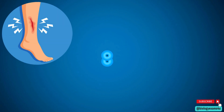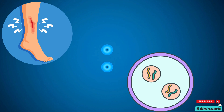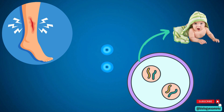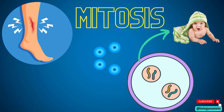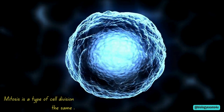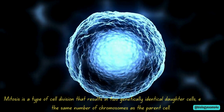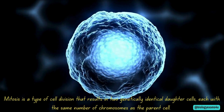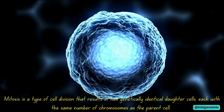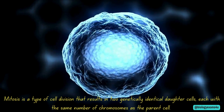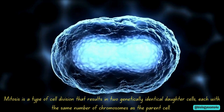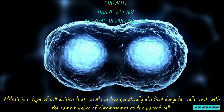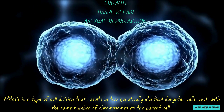Have you ever wondered how our body heals after an injury or how it grows from a tiny zygote into a complex organism? The answer lies in a fascinating process called mitosis. Mitosis can be defined as a type of cell division that results in two genetically identical daughter cells, each with the same number of chromosomes as the parent cell. It is essential for growth, tissue repair, and asexual reproduction in organisms like budding in hydra and yeast.